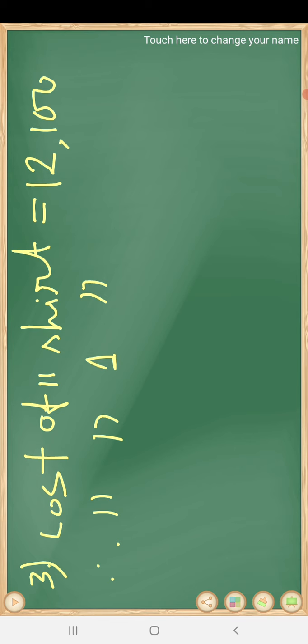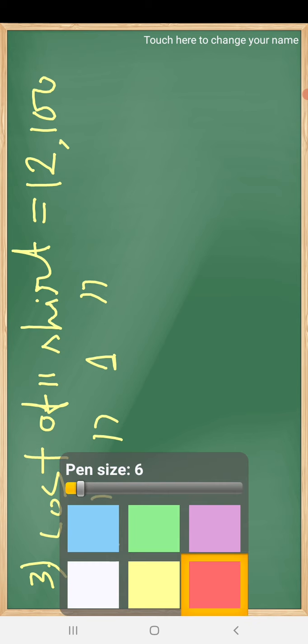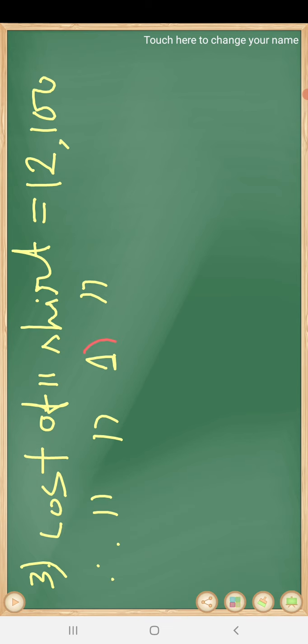So first we find out the cost of one shirt. This method is called the unitary method because we always use one first. We always first convert to one. According to the question we need the cost of twenty one shirts.